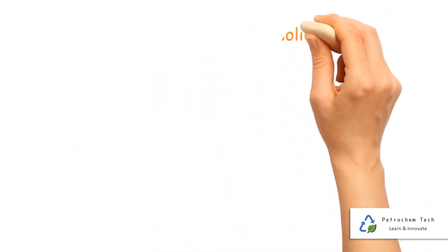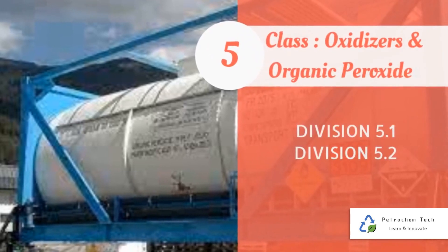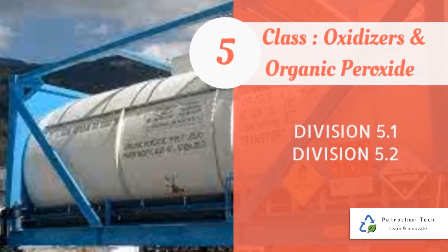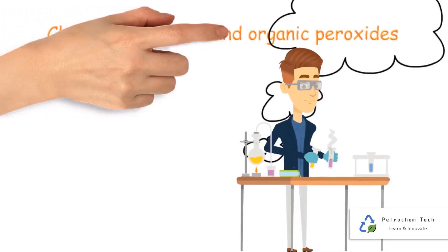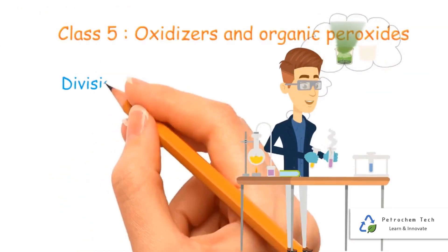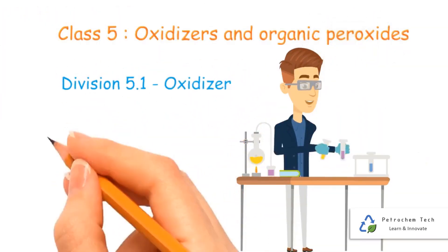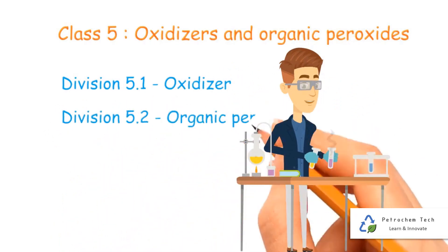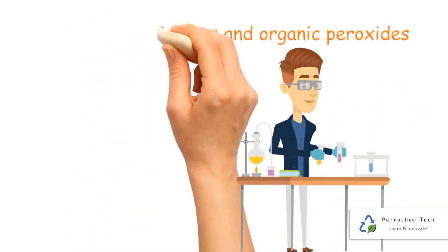Class 5 - Oxidizing Substances and Organic Peroxides, consisting of two divisions. An oxidizer is a chemical that readily yields oxygen in reactions, thereby causing or enhancing combustion.